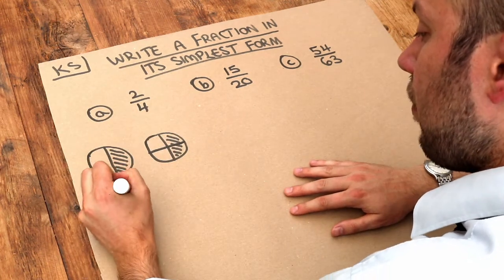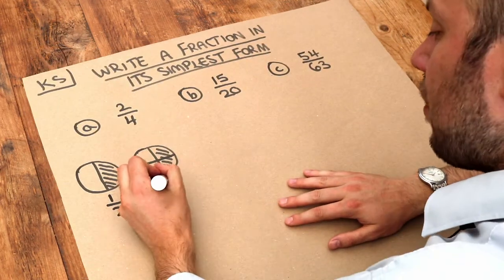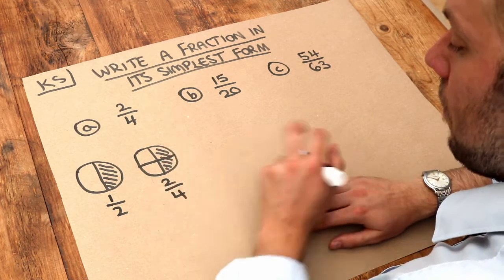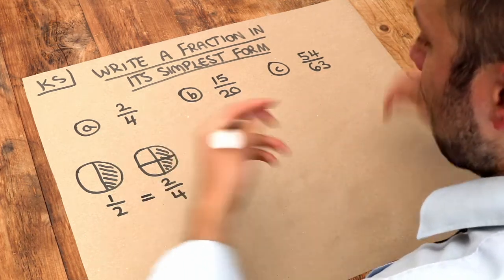So here we can see we have a half—one out of two pieces—and here we can see we have two quarters, because out of the four pieces we have two of them. Those fractions are equal because they represent the same amount of stuff.